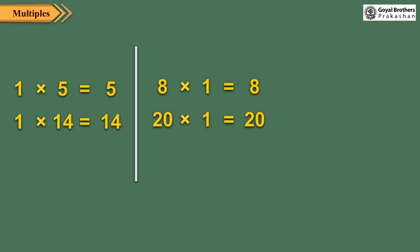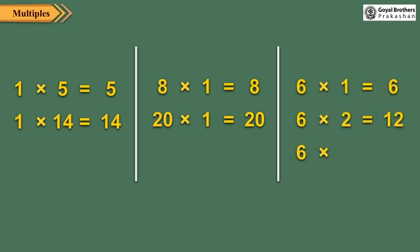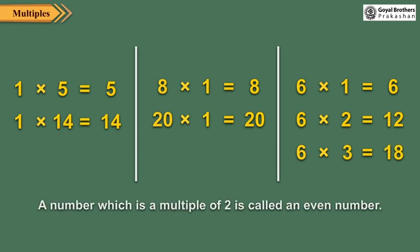The smallest multiple of a number is the number itself. For example, the multiples of 6 are 6, 12, 18, and so on. Clearly, 6 is the smallest among them.